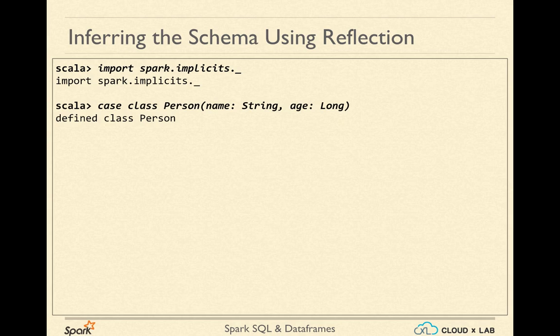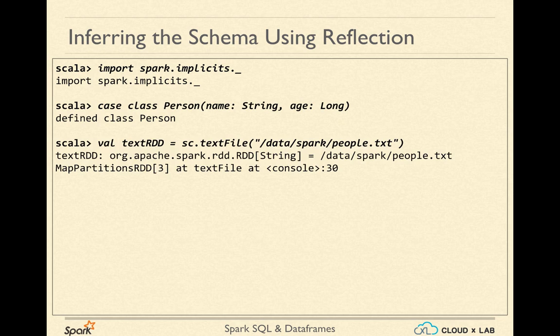Later, the variable names will become the names of the columns of the DataFrame. Now, let's create a text RDD using the textFile function on Spark context. This would create an RDD with the name textRDD, having each line from the file as a record. To understand what is inside the RDD, you can use the take function on textRDD.